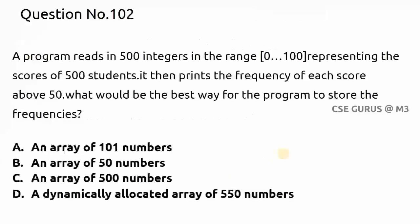Coming to question number 102: a program reads 500 integers in the range 0 to 100, representing the scores of 500 students. It then prints the frequency of each score above 50. What will be the best way for the program to store the frequencies?